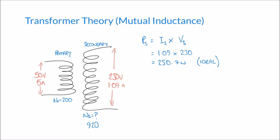In reality, efficiency will be less than 100%. For example, if the efficiency of our transformer is 70%, we can calculate the actual power in the secondary coil by multiplying the ideal power by the efficiency: 250.7 multiplied by 0.7, which gives 175.49 watts — the actual power encountered on the secondary coil in this case.